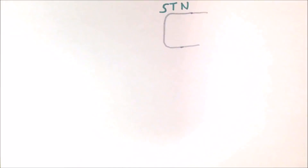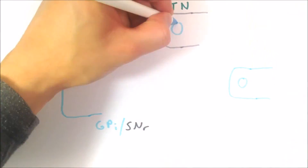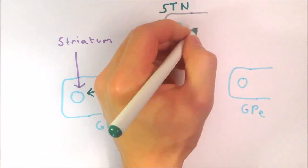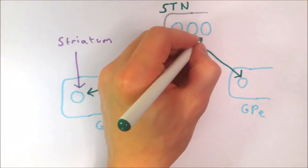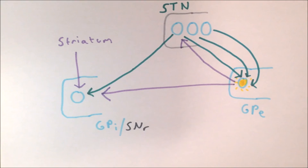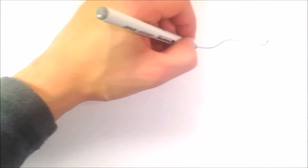Now we can see that as more loops are added, there is also increased activation of the inhibitory neurons in the globus pallidus externa, which act to inhibit the subthalamic nucleus and globus pallidus interna, preventing this runaway excitation.